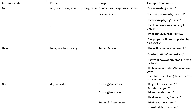Here is the summary for this lecture in table form. Auxiliary verb be — forms: am, is, are, was, were, be, being, been — used to form continuous or progressive tenses and passive voice. For example: she is reading a book, or the cake is made by the chef. Auxiliary verb have — forms: have, has, had, having — used to form perfect tenses. For example: I have finished my homework. Auxiliary verb do — forms: do, does, did — used to form questions, negatives and emphatic statements. For example: do you like ice cream? I do not understand. I do know the answer.